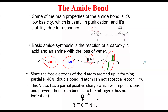Since the free electrons of the nitrogen atom are involved in forming a partial double bond — approximately 40% double bond character — the N atom cannot accept a proton in the amide bond. The nitrogen also has a partial positive charge, which repels protons and prevents them from binding, meaning there is no ionization once you have an amide linkage.